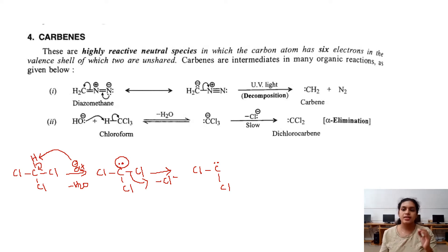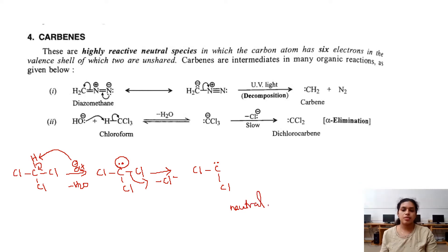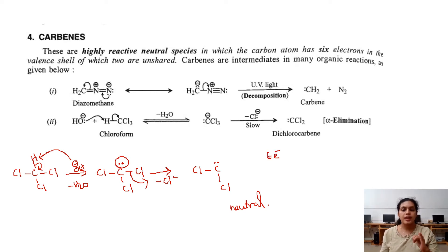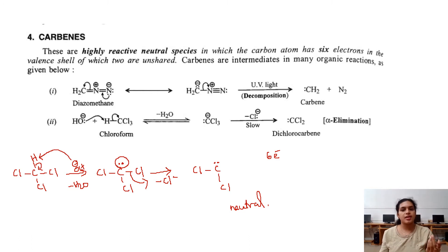So for the carbon atom: it gained one electron from hydrogen but lost one electron to chlorine. As a result, there is no net charge — the resulting species is neutral. It is neutral because there are 6 electrons around the carbon atom: 2 electrons as a lone pair, and 2 electrons in each of the two C-Cl bonds. It is electron deficient because it needs 2 more electrons to complete the octet, making it a Lewis acid.